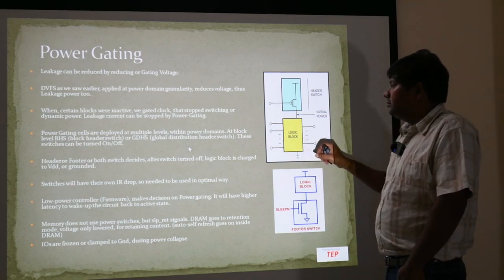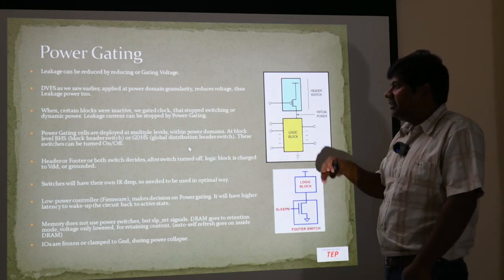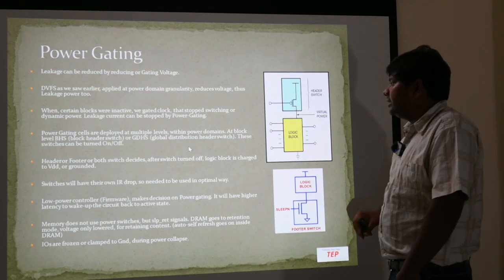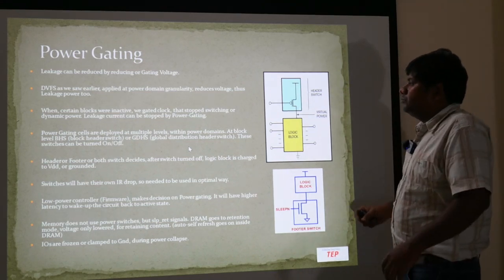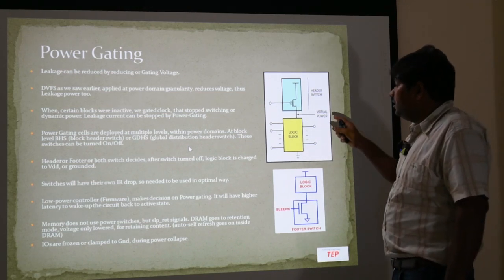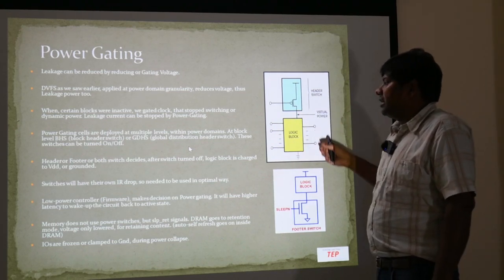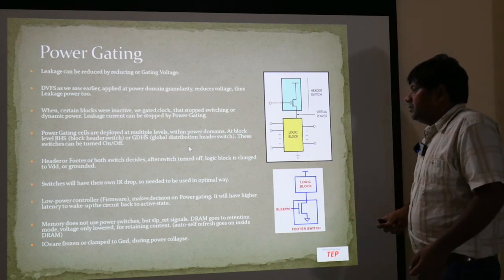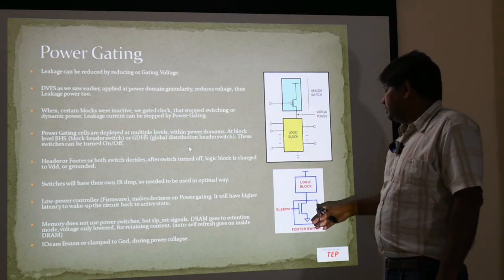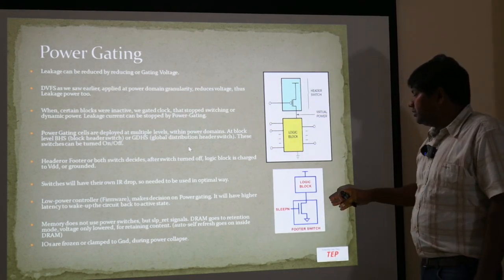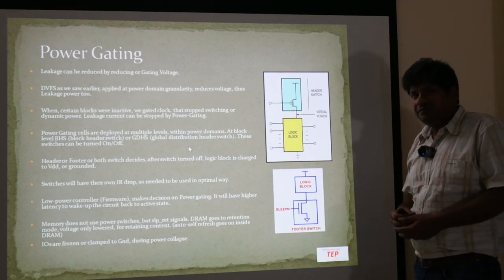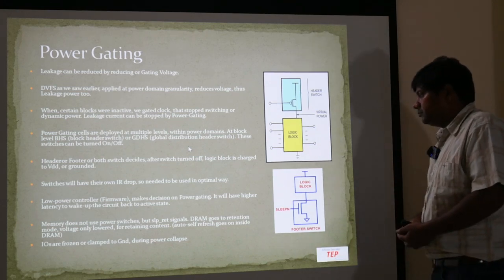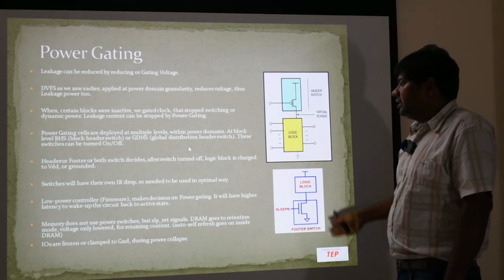Power gating can happen at multiple levels. There is a hierarchy — at the lower level we can gate the power, or at the block level, or at the global level there can be a switch that is power gated. The penalty with power gating is that when you need to wake the circuit up, it takes more time than other techniques, because there is no power to the block and many things need to be initialized again. Also, the gating switches introduce their own IR drops.